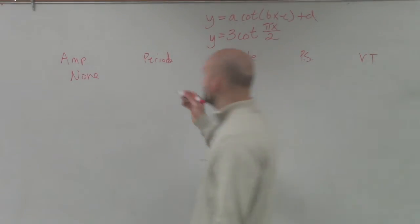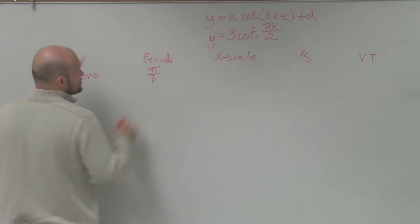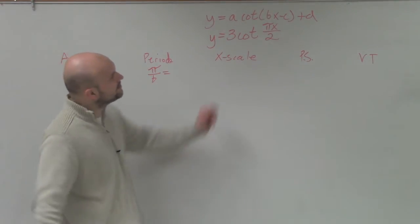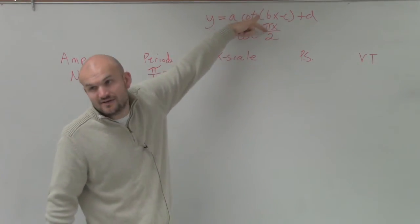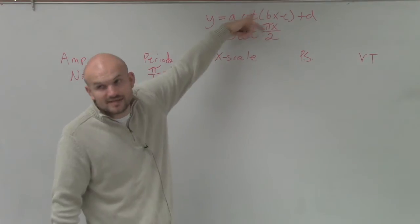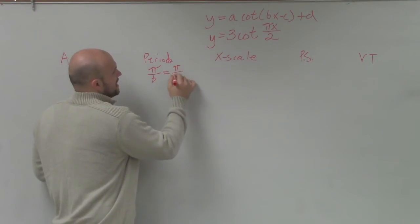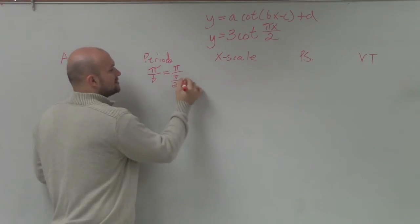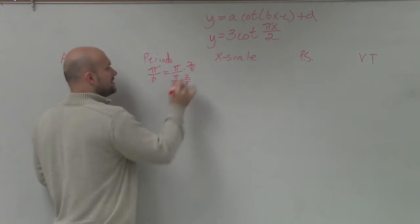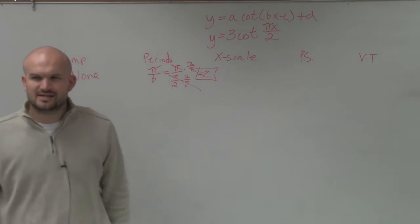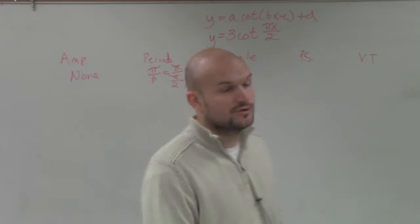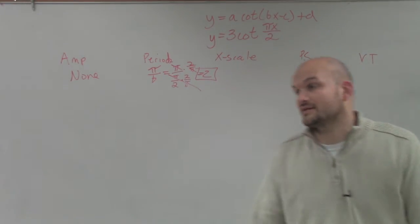The period. Remember, the period in this case is not 2 pi divided by b. It's just pi divided by b. So what we do is we take the coefficient of your variable, which is your b. In this case, we have pi, and pi is being divided by 2. So I'm going to have pi divided by pi divided by 2. Now, I multiply by the reciprocal, and then what you guys can see is that goes to 1. Those cancel out, so I'm just left with a period of 2. This is now going to have a period of 2, which is not going to have a pi in any x scale of anything of that sort.